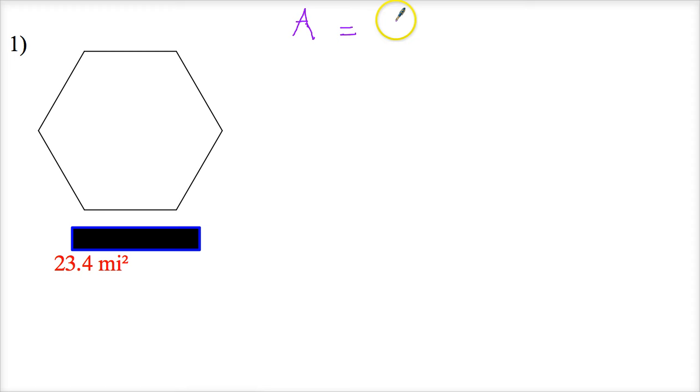But what I'm really going to do is say that's the same as apothem times perimeter divided by 2. This is my area, by the way.